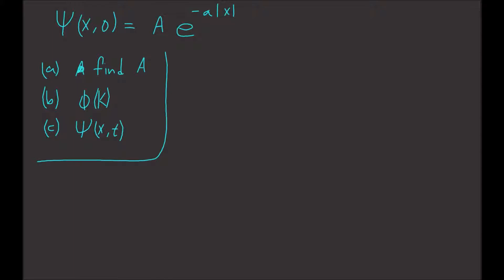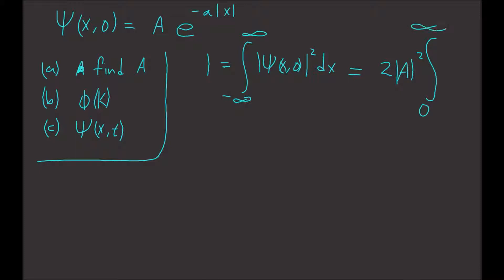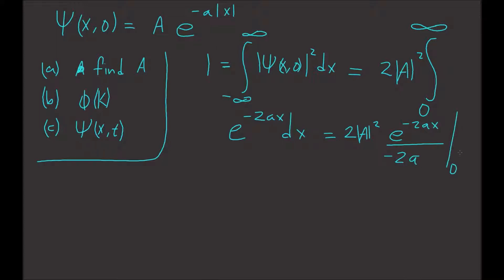First we have to find the normalization constant, which means we have to normalize this equation. So 1 is equal to the integral from negative infinity to infinity of ψ* ψ dx, which is the same as 2 times the modulus squared of A times the integral from 0 to infinity of e to the minus 2ax dx. Doing the integral and taking the limits, we get A is equal to the square root of small a.